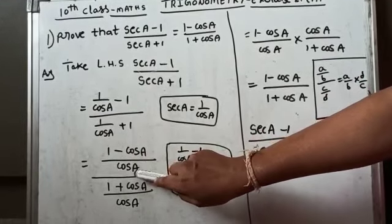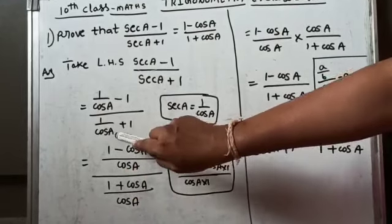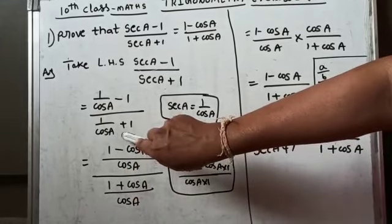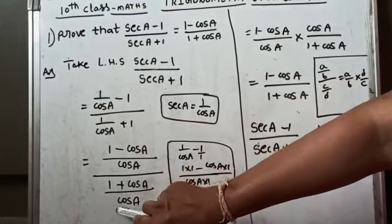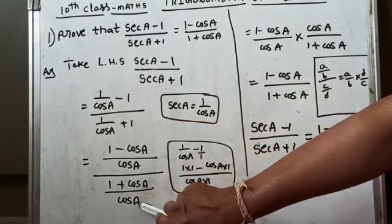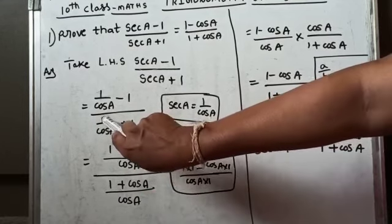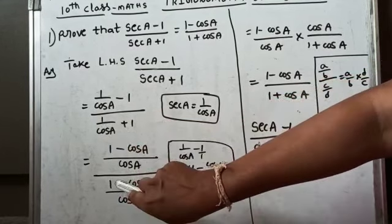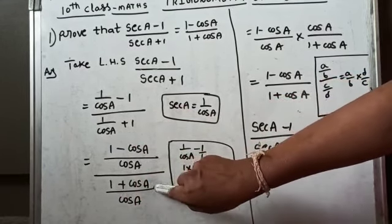Similarly, for the denominator (1/cos A) + 1, the LCM is also cos A. So the denominator becomes (1 + cos A) / cos A.